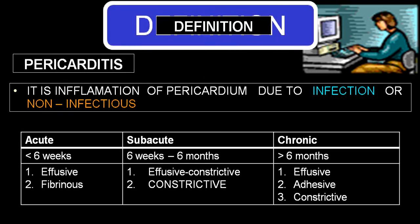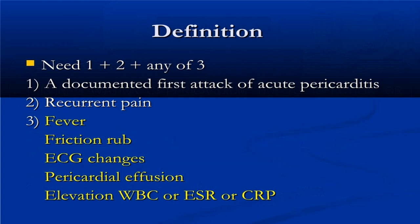Depending on duration, pericarditis is divided into acute, subacute, and chronic. If duration is less than six weeks, it is acute — including effusive and fibrinous varieties. Subacute is between six weeks and six months, and can be effusive, constrictive, or a mixed effusive-constrictive variety. Chronic is more than six months in duration and can be effusive, adhesive, or constrictive.